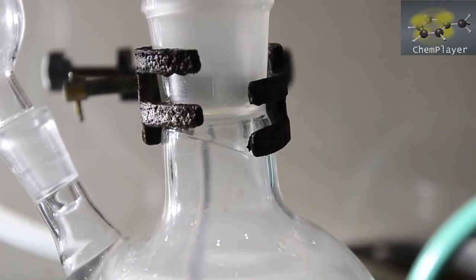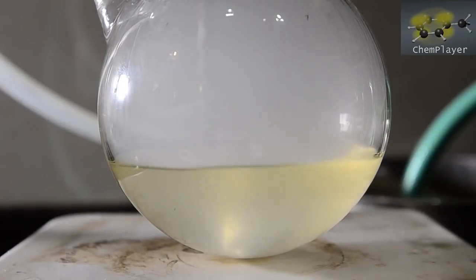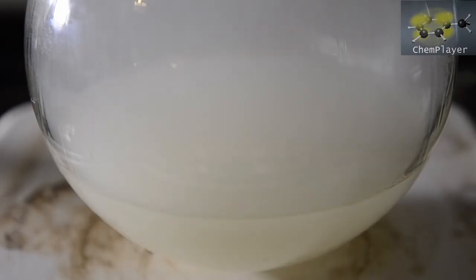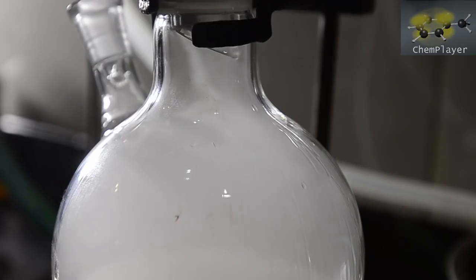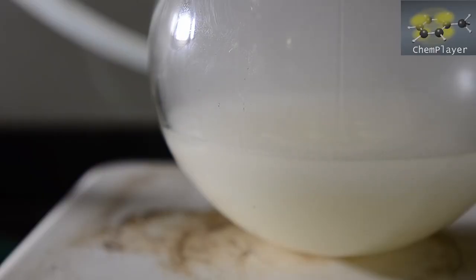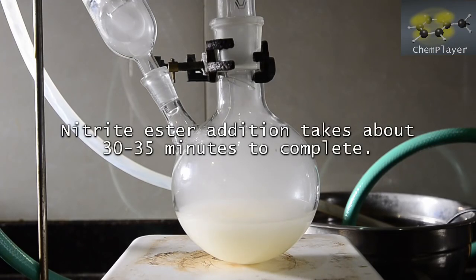White fumes will appear in the apparatus and the mixture will start to get hot. Soon the cloudiness appears and we notice our stir bar starting to make strange noises as a solid starts to form in the mixture. Soon the mixture starts to reflux with the heat produced. Keep the addition going steadily and it should take about 30 minutes to complete.